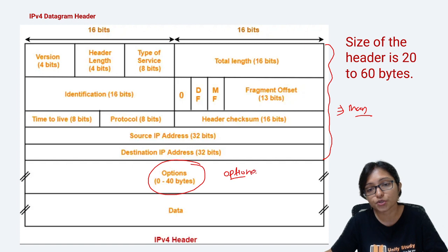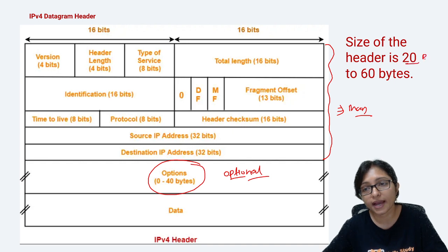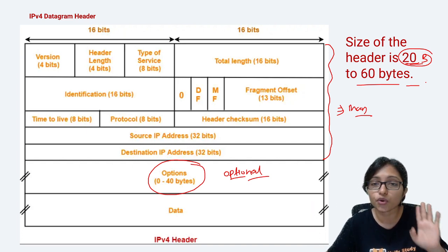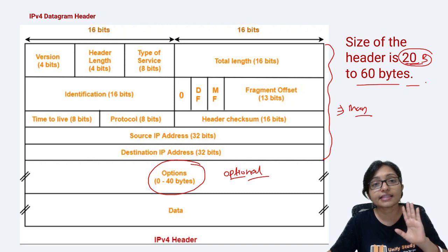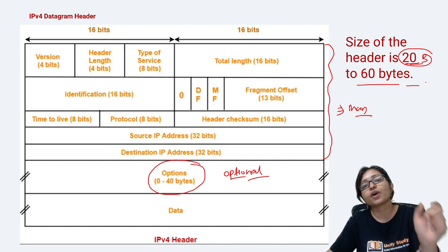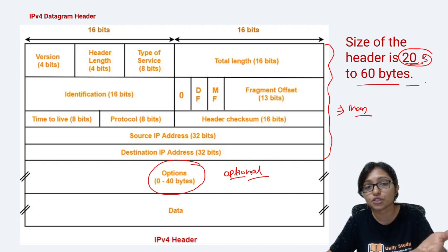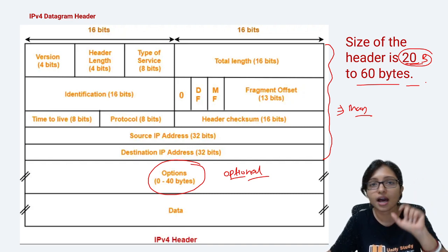This 20-byte section is your mandatory part, and this 40-byte section is the optional part — this part is optional, not mandatory. So the minimum size will be 20 bytes and the maximum can be 60 bytes. Now in the header, if you are able to identify how many bits are there for each part, then easily we can decode the number.